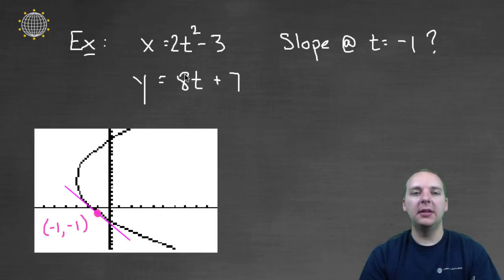Alright, let's look through a basic example here. Let's say x equals 2t squared minus 3 and y equals 8t plus 7, and I'd like the slope at t equals negative 1.